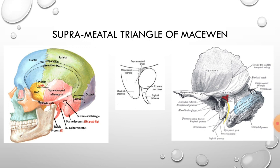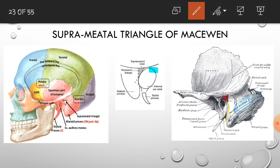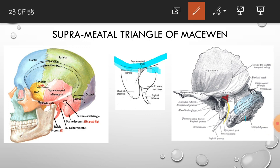The next topic is the suprameatal triangle of Macewen. Its boundaries are formed by the postero-superior margin of the external auditory meatus, the supramastoid crest, and a tangent drawn from it. Together these form Macewen's triangle or the suprameatal triangle.